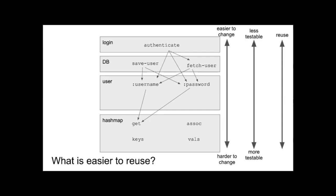A test for behavior at the bottom is going to last longer — that particular test you write for that behavior is going to be valid longer. The stuff at the bottom is essentially unchangeable, and if you test it properly you'll never have to test it again. At the top, something like main is less testable because you're going to change it a lot — writing a test for it is not as valuable. Also, stuff that everything depends on, like assoc — everybody's program depends on assoc at some point — so having a good test for assoc is valuable to more of your code.